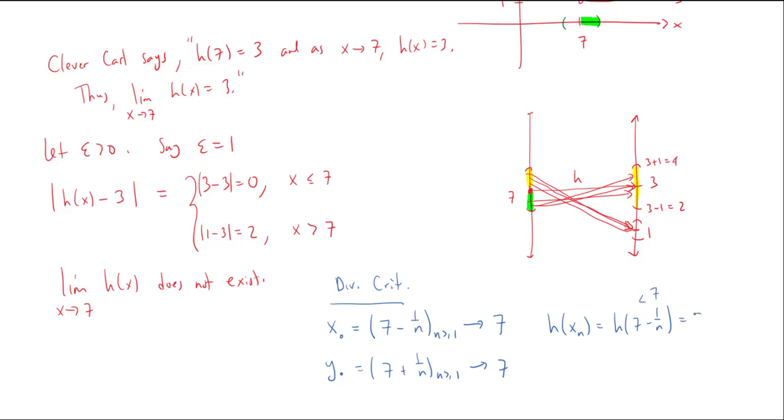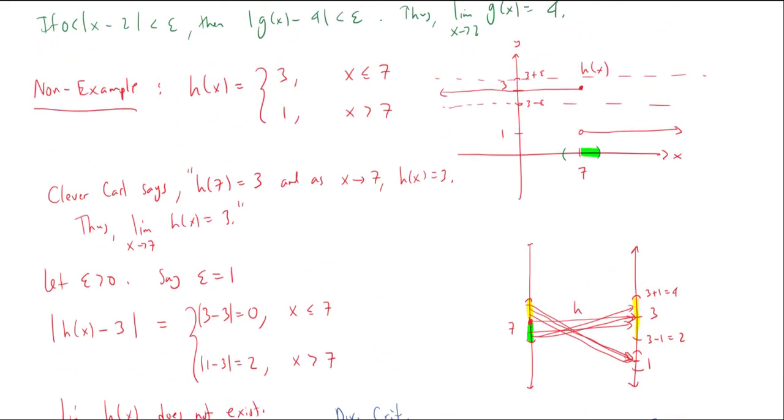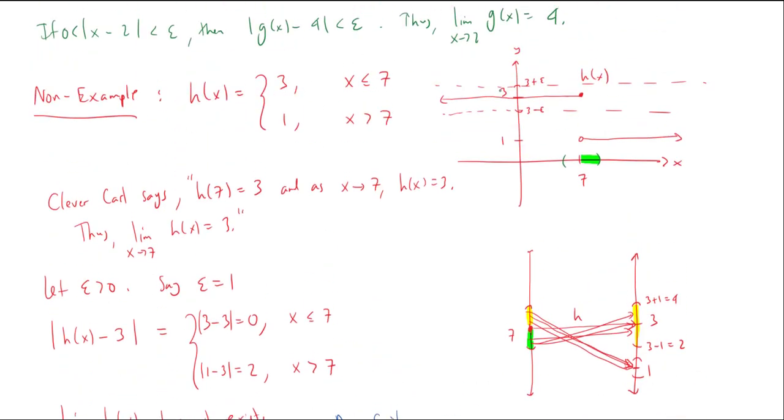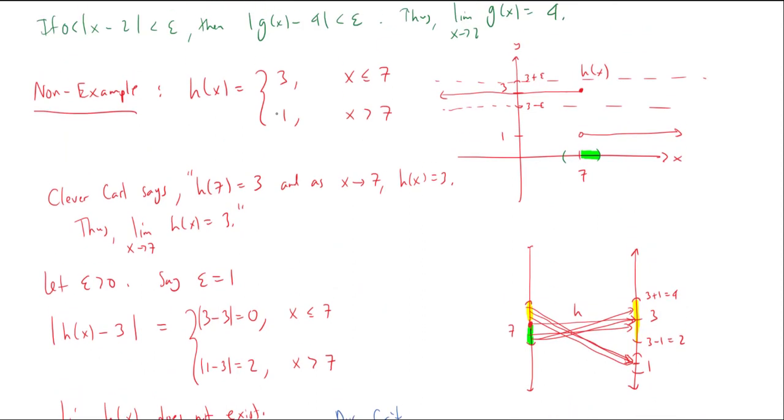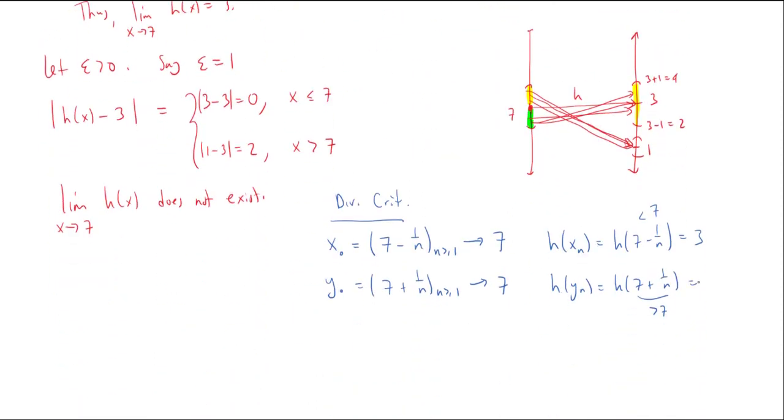Before you get to seven, the value of the function is three. And if I do H of Y sub n, this will be H of seven plus one over n. But now this seven plus one over n is greater than seven. And once you're greater than seven, the value of the function is one.